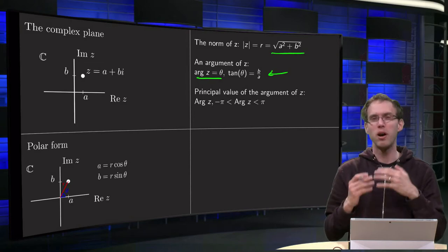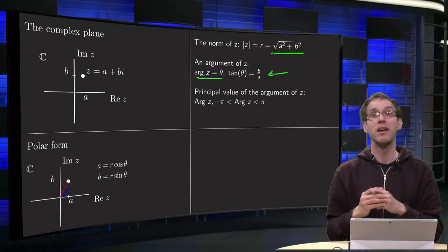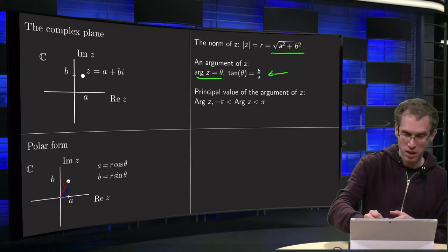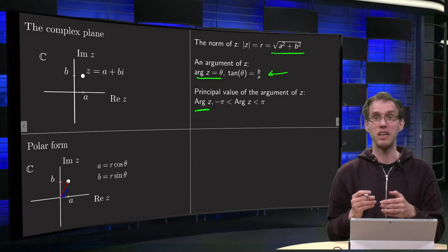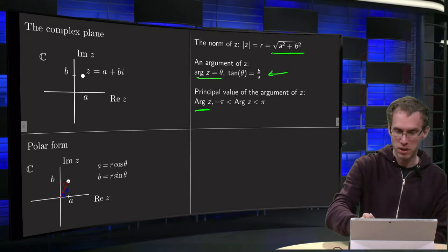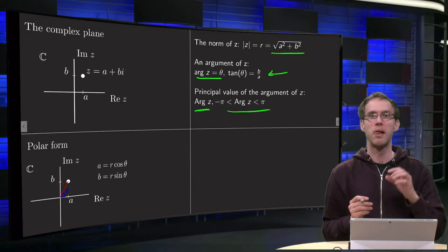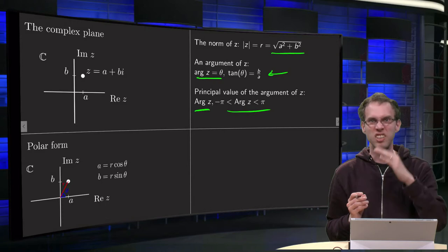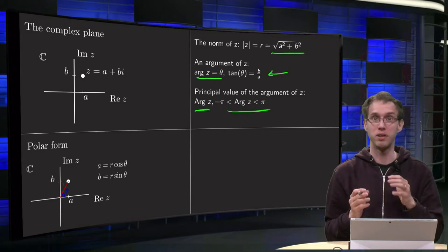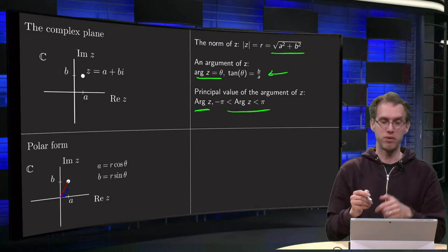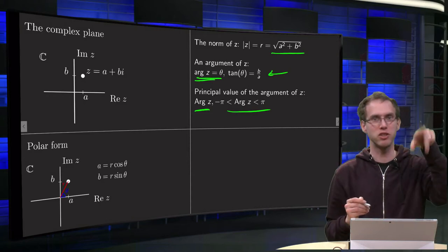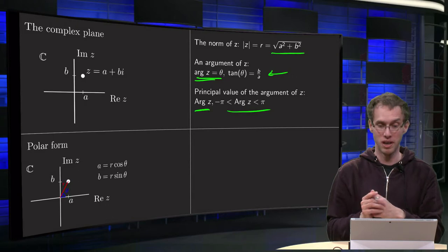If we want a specific value of theta, we use the capital A — the Argument of Z — and in that case theta must be between minus pi and pi. So you choose theta such that it lies between minus pi and pi for the capital A Argument, and if you use the small a argument you can add factors of 2pi as many as you like.